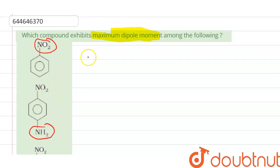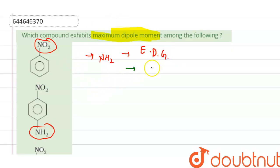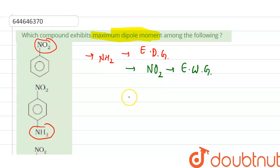We know that the NH2 group is an electron-donating group and the NO2 group is an electron-withdrawing group. So if an NH2 group is present on a ring, electron density will move towards the ring, and when a NO2 group is present on the ring, electron density will move towards the NO2 group.